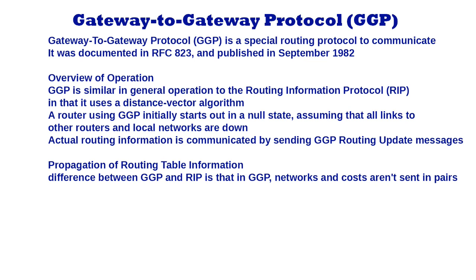Propagation of routing table information. One interesting difference between GGP and RIP is that in GGP, networks and costs aren't sent in pairs. Instead, a GGP router sends its routing table in groups. If it has 3 networks it can reach at a cost of 1, it sends those in a group with distance value 1. Then if it has a few at a cost of 2, it sends those in a group with distance value 2, and so on.